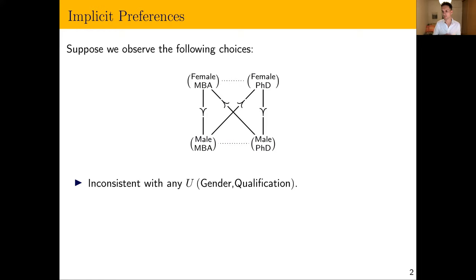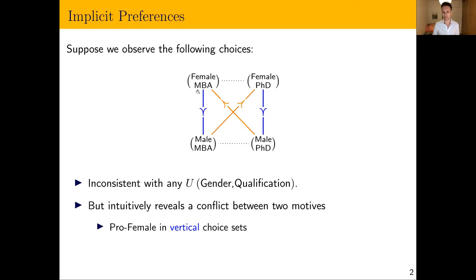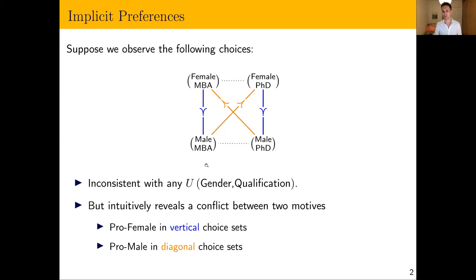These choices are not consistent with any utility function defined over gender and qualification because they're intransitive — an intransitive cycle. But there's an intuitive conflict here between two motives: pro-female choices in the vertical choice sets and pro-male choices in the diagonal choice sets. In more direct choices you exhibit one set of preferences, and in more indirect choices you exhibit a different set.